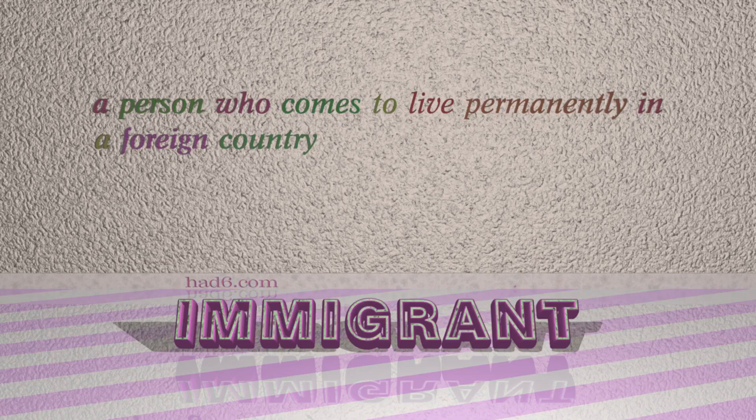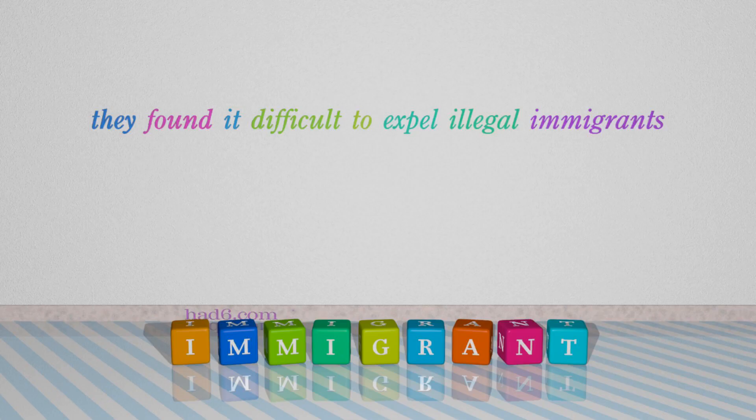Number 7: Immigrant. Which means a person who comes to live permanently in a foreign country. For example: They found it difficult to expel illegal immigrants.